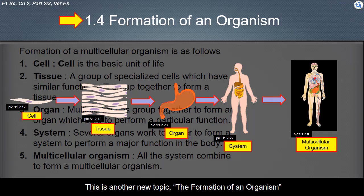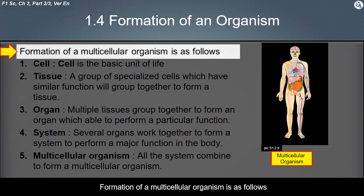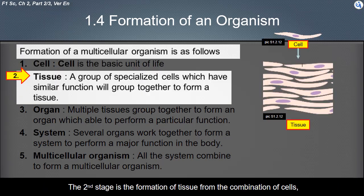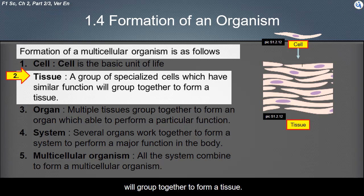This is another new topic: the formation of an organism. The formation of a multicellular organism is as follows. The first stage is the formation of a cell from the cell division process, and cell is the basic unit of life. The second stage is the formation of tissue from the combination of cells, where a group of specialized cells that have similar function group together to form a tissue.